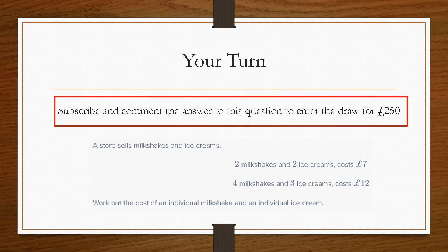Now it is your turn. So in order to enter the £250 prize giveaway at the end of the month for the whole of 2021, all you have to do is subscribe to the channel and comment the correct answer to this question here. Only valid subscribers with the correct answer will be entered into the draw. Now the more comments and entries you make on all the videos published in 2021, the more entries that you will have each month. So this question here is similar to Question 3 in that you will have to make the equation first and then find the individual price of a milkshake and an ice cream.